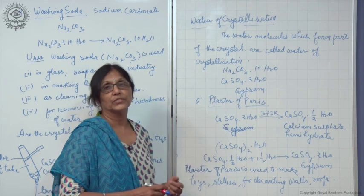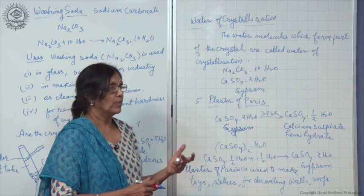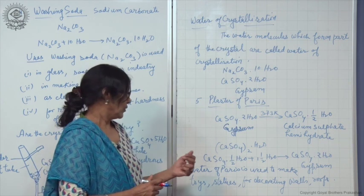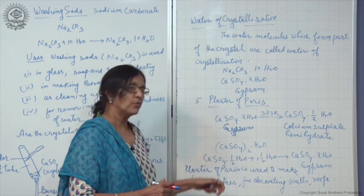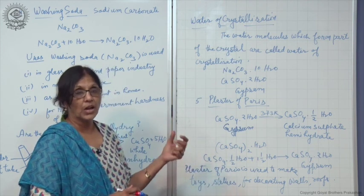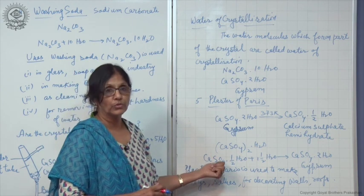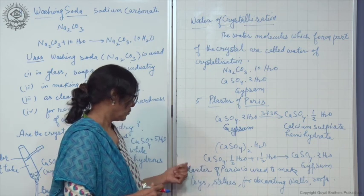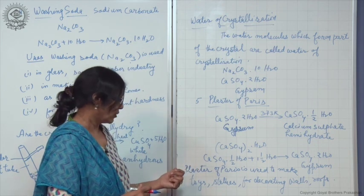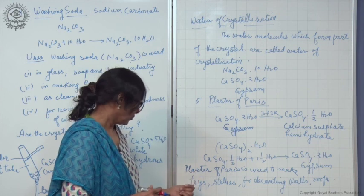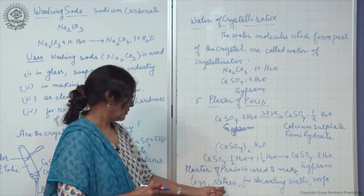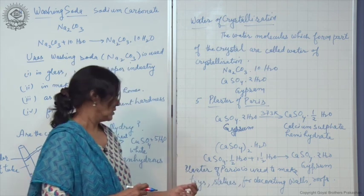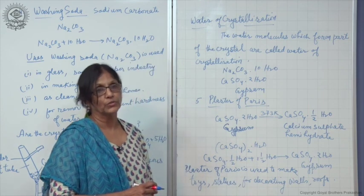As you all know, plaster of Paris is used by doctors to make plaster over fractured bones to cure them. When plaster of Paris is mixed with water, it forms gypsum again, which is a hard mass. It is used to cure fractured bones, and a plaster is applied on the fractured bone. Main use of this is to cure fractured bones. It is also used to make toys and statues for decorating houses. You must have heard about POP decorations on walls and ceilings. It is also used for decorating walls and ceilings of houses and rooms.